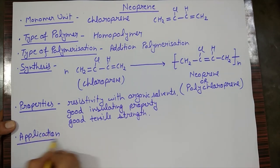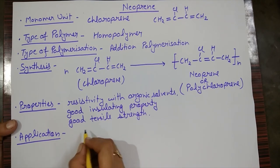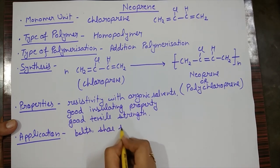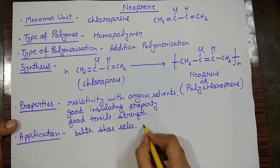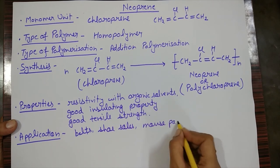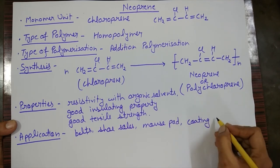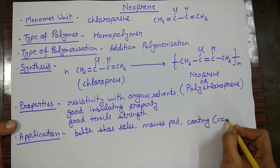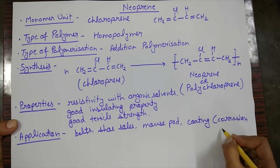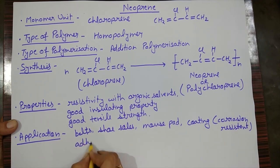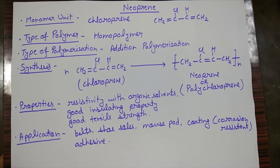In terms of applications, we can make different articles such as belts, shoe-soles, and mouse pads. Neoprene is also used for corrosion-resistant coatings and flame-resistant coatings. It can also be used as an adhesive in what are called contact cements.